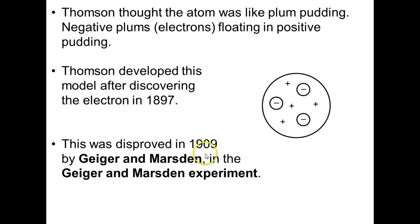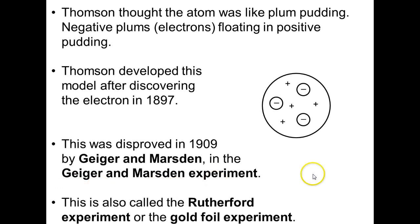This was disproved in 1909 by Geiger and Marsden, in the Geiger and Marsden experiment. This is also called the Rutherford experiment or the gold foil experiment. But in IB physics, we call it the Geiger and Marsden experiment. They were doctoral students or researchers working under Rutherford.